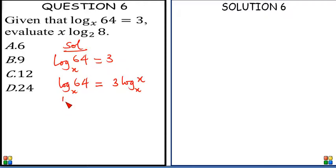This becomes logarithmic 64 base x equals logarithms x raised to the power 3 base x. Yes, it's allowed. These 3 can become the power of this x. That's one of the laws of logarithms.